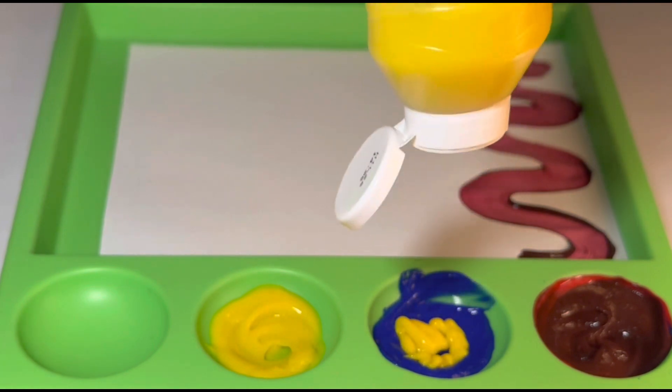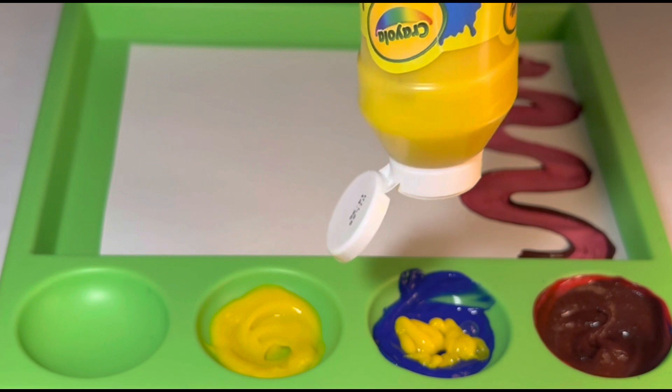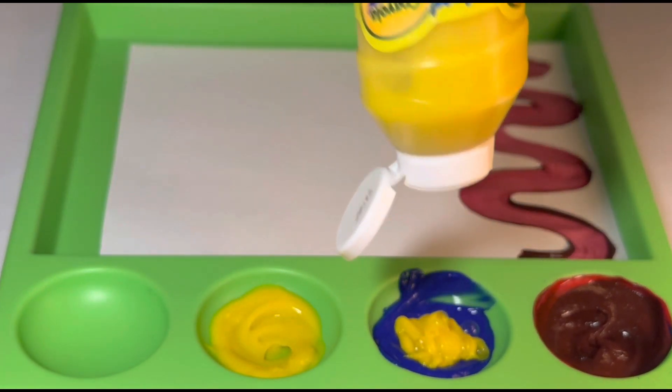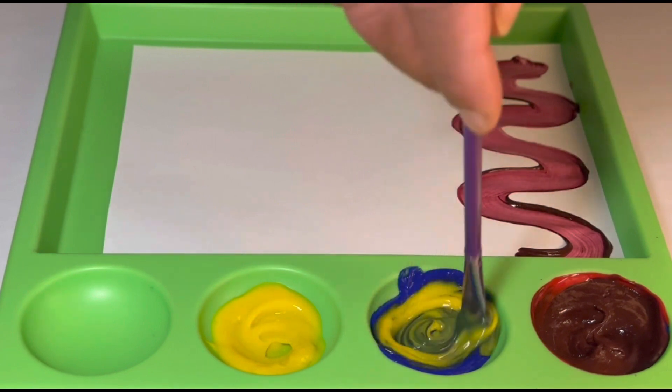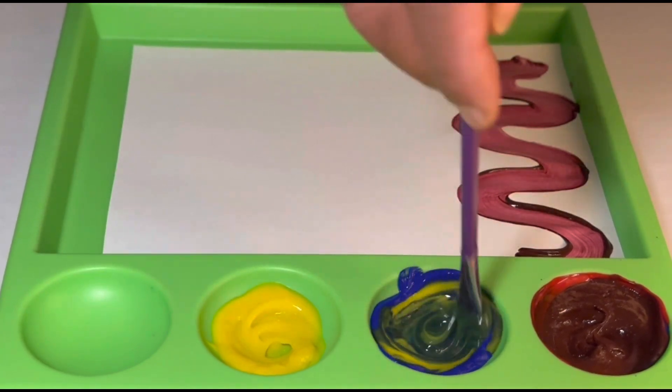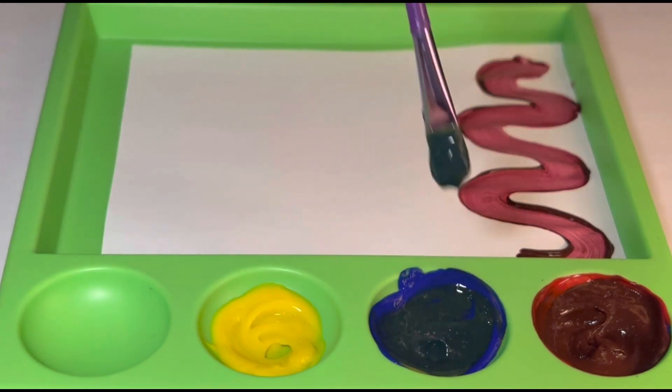Now, for our second secondary color, we will mix blue and yellow together. When mixing blue and yellow together, we will make a beautiful green color.